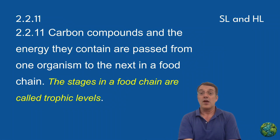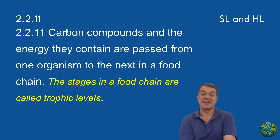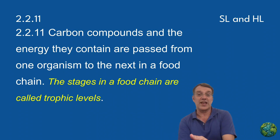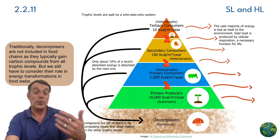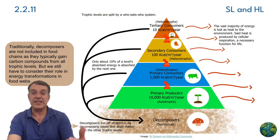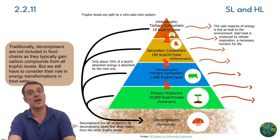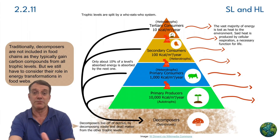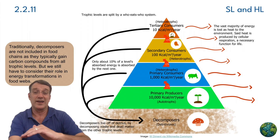In ecosystems, carbon compounds and the energy that they contain move from one organism to the next through food chains. Each stage in a food chain represents a different trophic level. When we study food chains, we typically don't include decomposers because they obtain carbon compounds from multiple different trophic levels rather than following a linear progression.